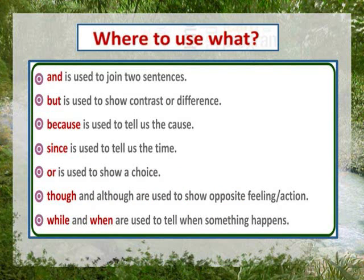Now let's learn where to use what — means, in conjunctions ko hum kaise, kab, kahan use karenge. First is 'and'. And is used to join two similar words or sentences. Like: he is a kind and a good person. And ka use kab karte hain — jab hume koi bhi do similar words ya sentences ko join karna hota hai. He is a kind and a good person — ek person ki quality bata hi jari hai ki woh kind and good person hai. In two similar words ko add karne ke liye hamne and ka use kia.